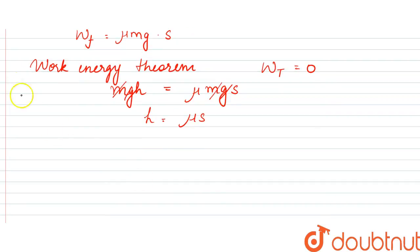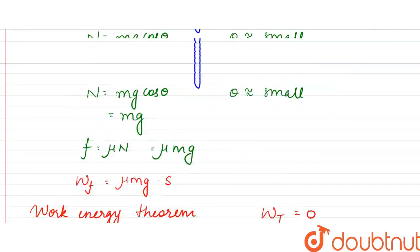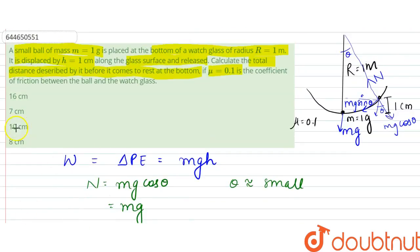So how much distance does it travel is equal to h by mu, so that is equal to h is 1 centimeter, mu is 0.1, so that would be equal to 10 centimeters. So our answer is option C, 10 centimeters. Thank you.